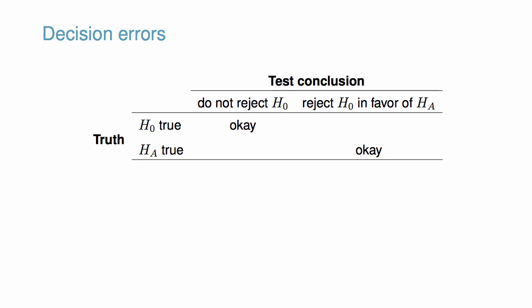Hypothesis tests are not flawless. In a hypothesis test, we make a statement about which of the null or alternative hypotheses might be true, but we may choose incorrectly. There are four possible scenarios in a hypothesis test. Two scenarios represent a correct decision, and two scenarios represent an error.